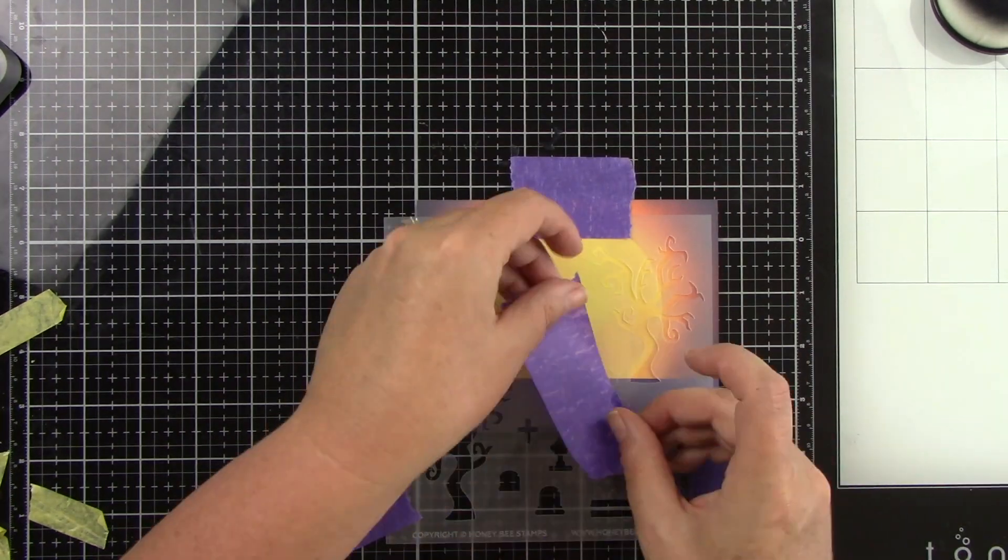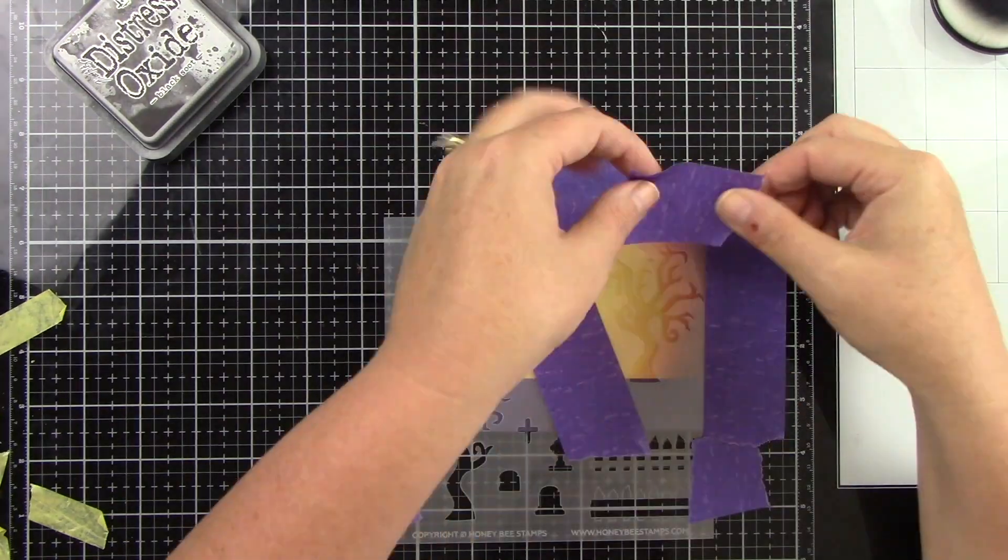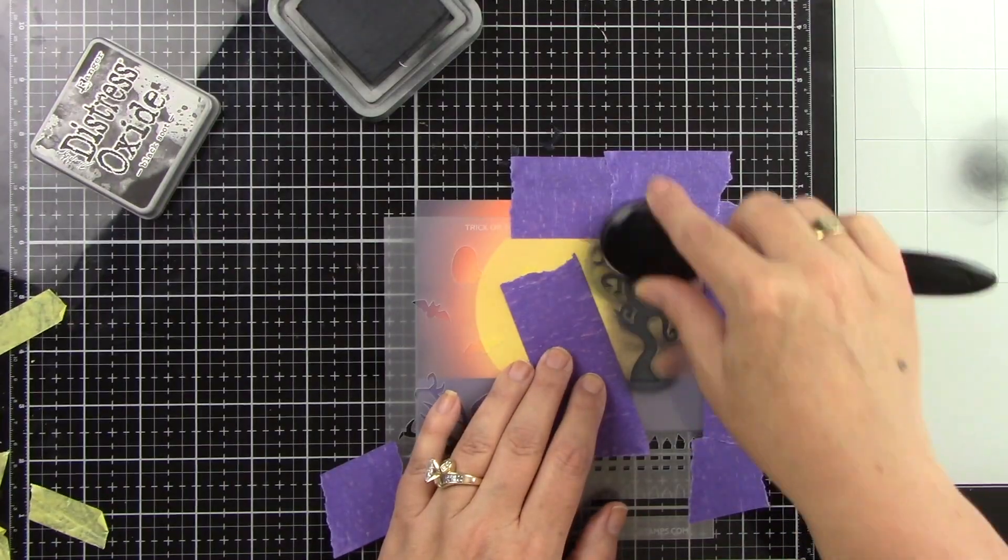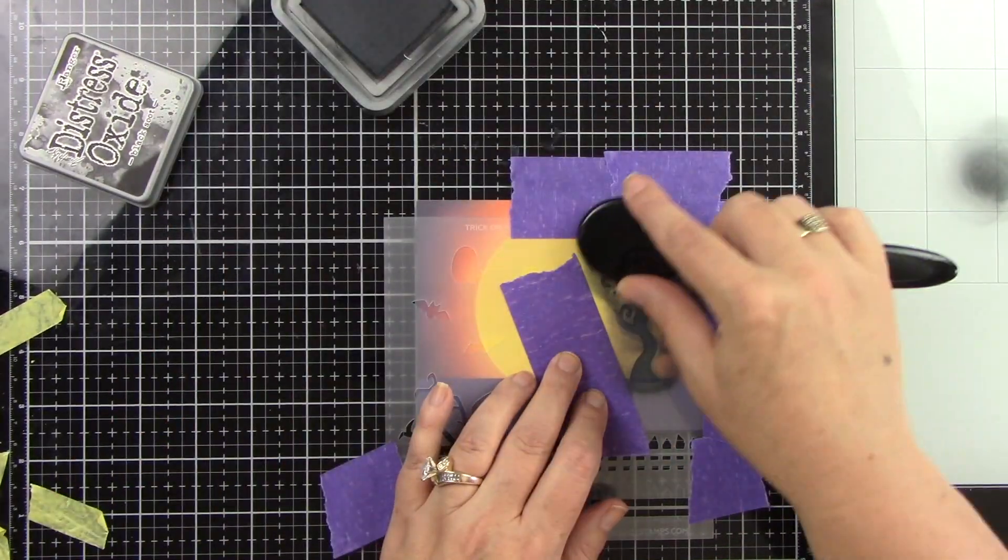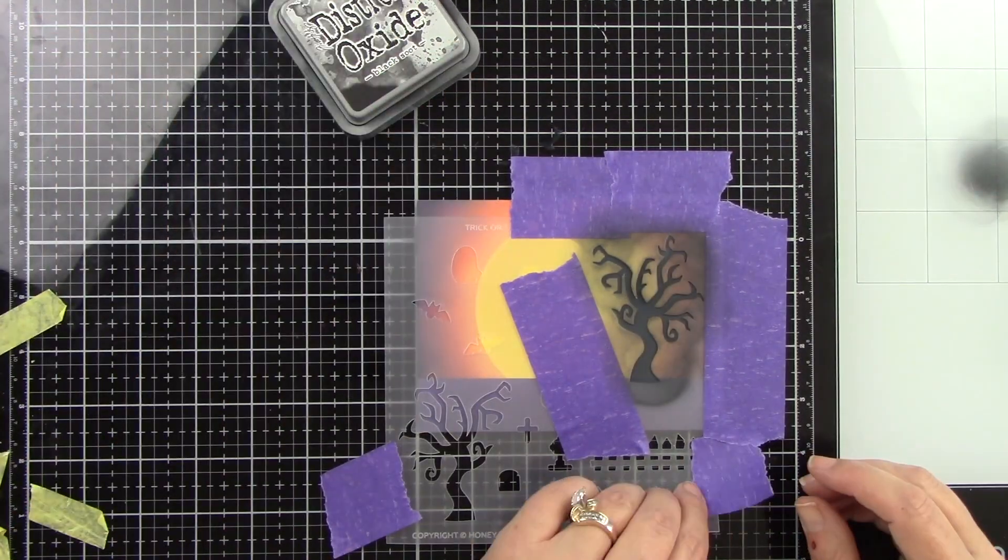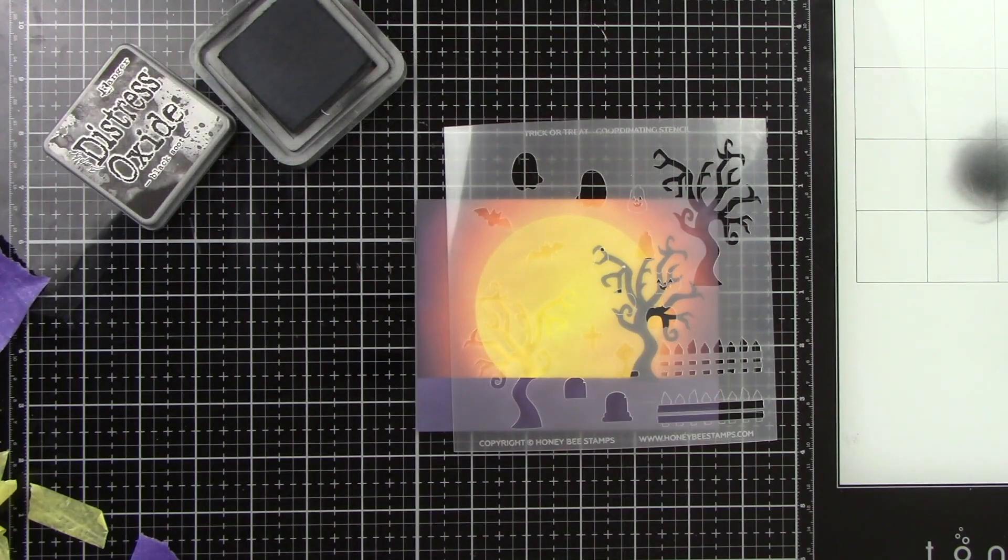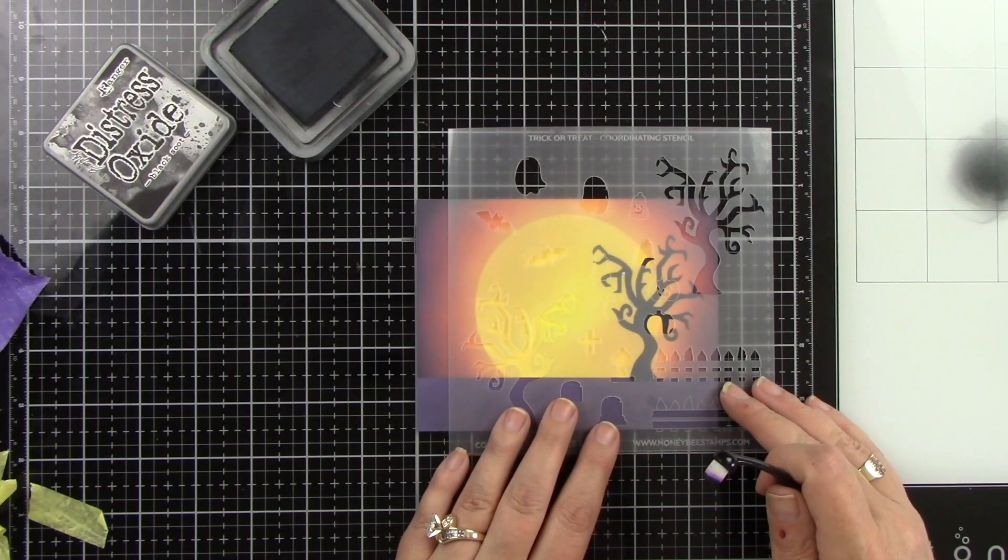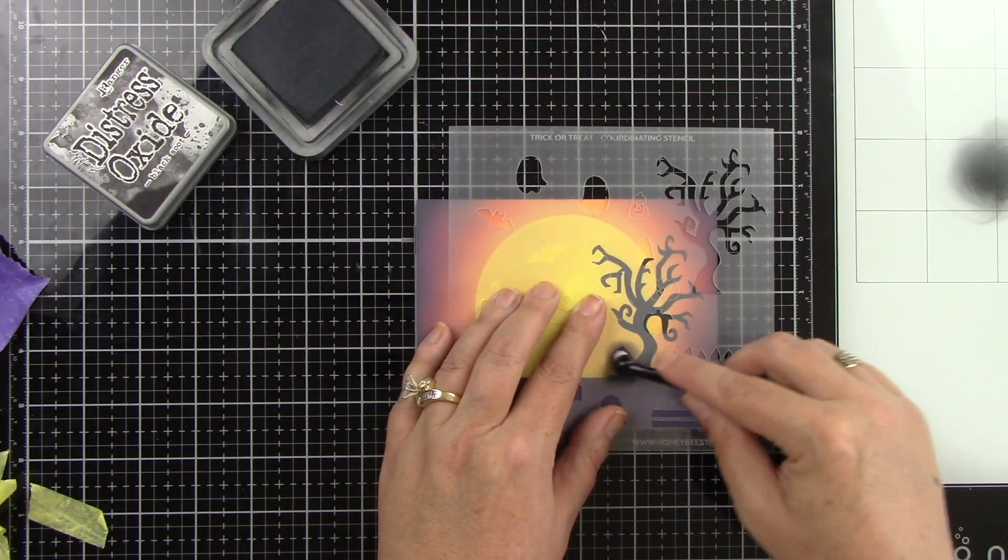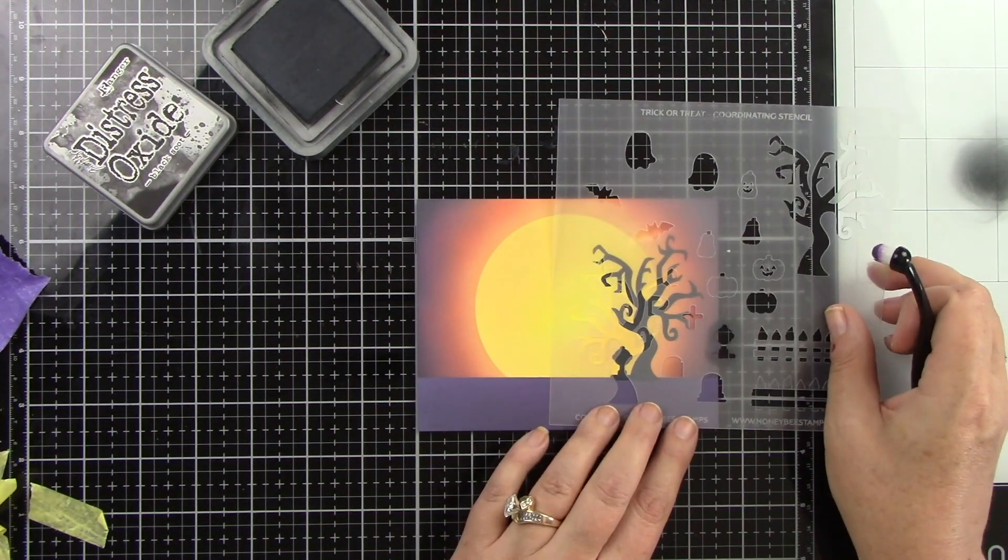Here is one of the stencils. This has the trees, the ghosts and bats, and some tombstones. The other stencil has the moon and clouds and haunted houses. I'm just going to use this stencil, so I'm just inking that up with black soot. That's the black ink I'll be using for all of these images. I love how that looks in front of the moon. I think having that black in front makes it look like the moon is glowing even more. Now I'm going to come in with the tombstones and just add those around the tree.